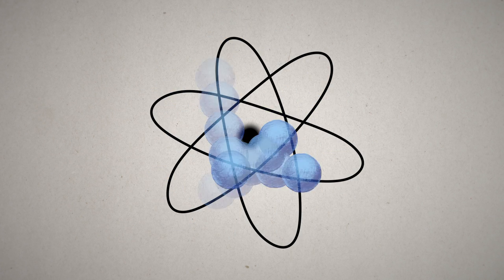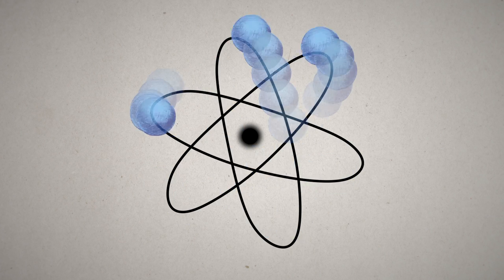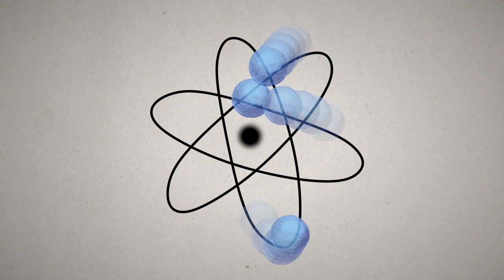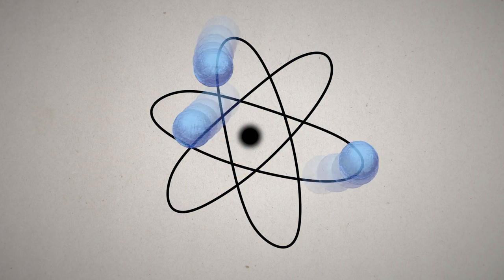You might be familiar with this traditional representation of an atom, a nucleus in the center and electrons orbiting outside. But in reality it looks more like this. The inherently fuzzy nature of electrons means it's difficult to know exactly where they are at any given time, and they essentially form an electron cloud around the nucleus.